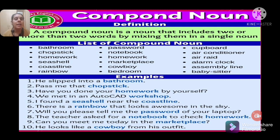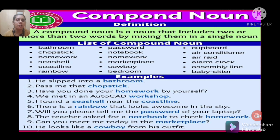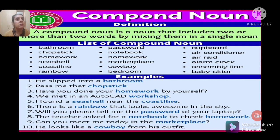Compound nouns in sentences: 'He slipped into a bathroom' — bathroom is a compound noun. 'Pass me that chopstick' — chopstick is a compound noun. 'Have you done your homework by yourself?' — homework is a compound noun. 'We met in an autocad workshop' — workshop is a compound noun. 'I found a seashell near the coastline' — seashell and coastline are both compound nouns. 'There is a rainbow in the sky' — rainbow is a compound noun. 'Will you tell me the password of your laptop?' — password is a compound noun.